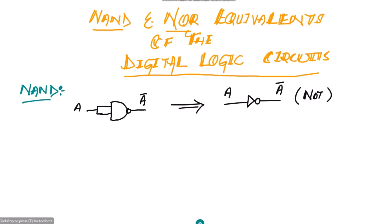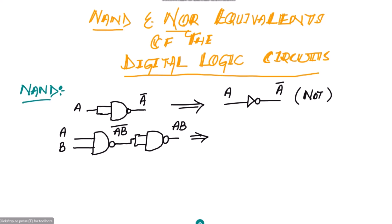Similarly, if we have a two-input NAND gate with inputs A and B, the output is (AB)'. If we take that output and apply it to another NAND gate with both inputs shorted together, the output of that second gate is AB. This is clearly the functionality of an AND gate, where inputs A and B produce output AB.